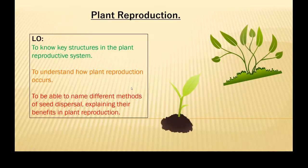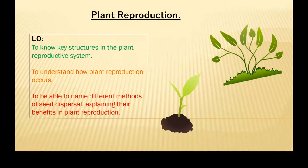So, let's go through today's objectives. Today, we need to know key structures in the plant reproductive system. We need to understand how plant reproduction occurs. And then we need to be able to name different methods of seed dispersal, explaining their benefits in plant reproduction.